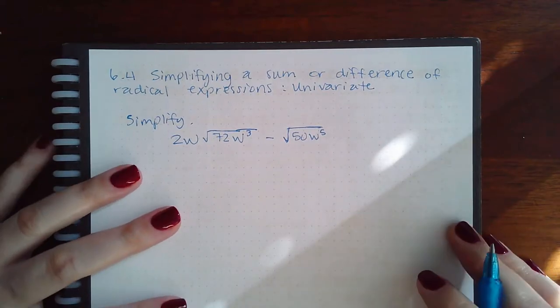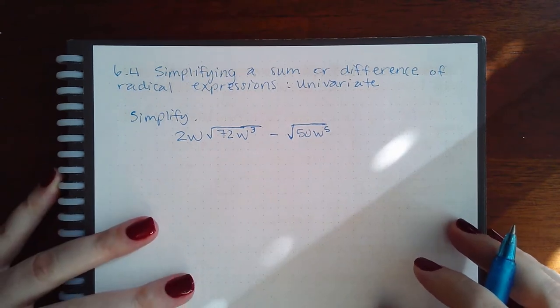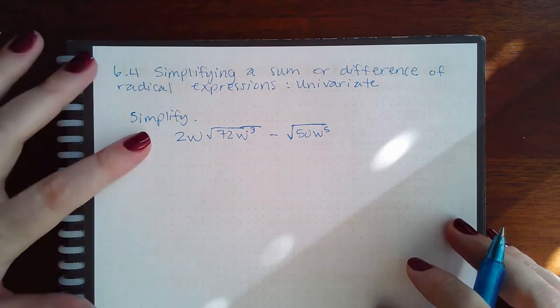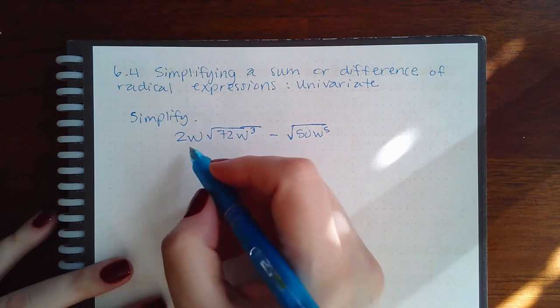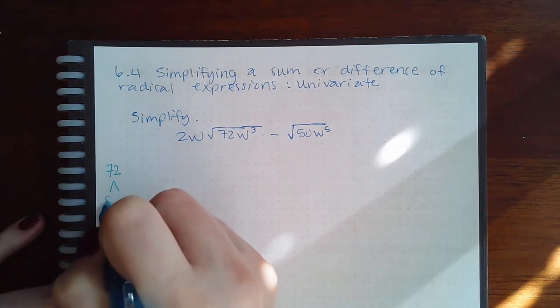So here we have 6.4, simplifying a sum or difference of radical expressions, univariate. This is just a little more advanced than the other one. When we're doing this problem, we're going to do everything the same as we did before. So let me break up 72. I know that's 8 times 9.